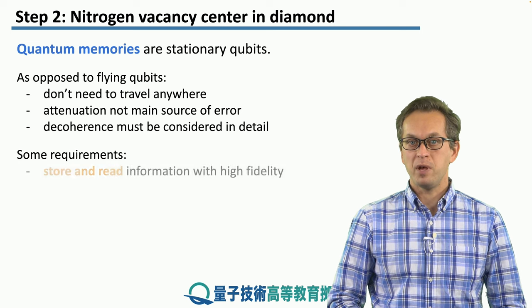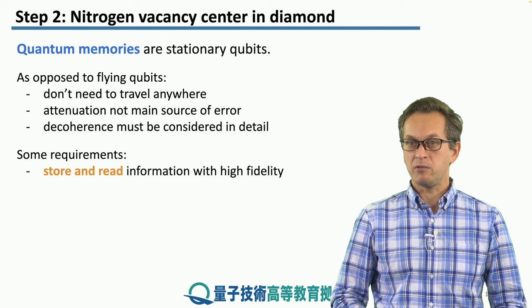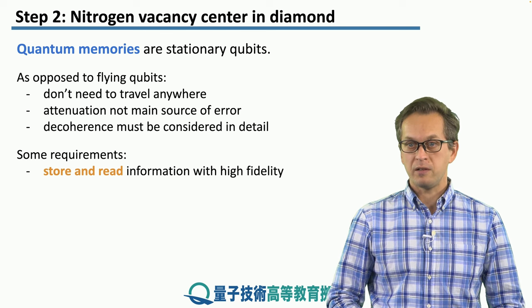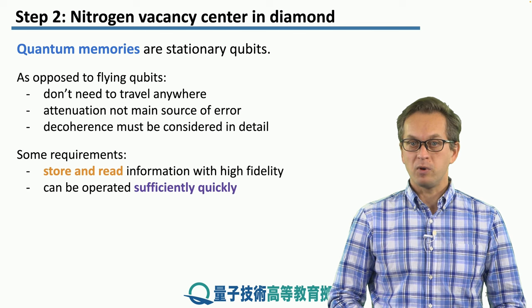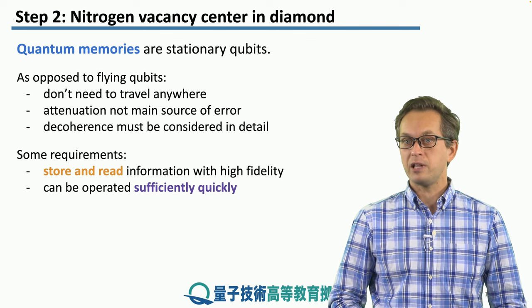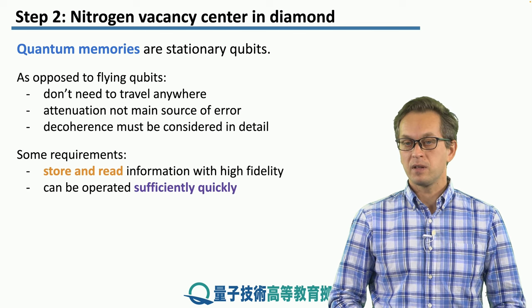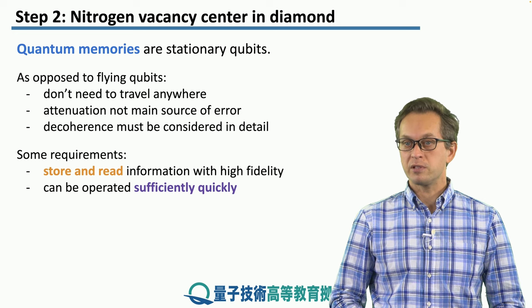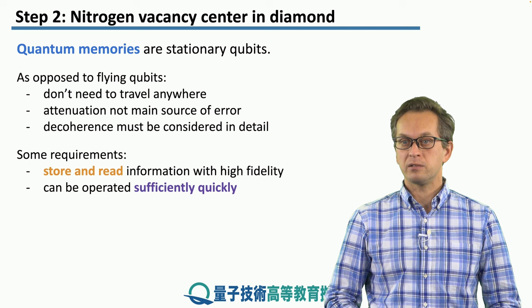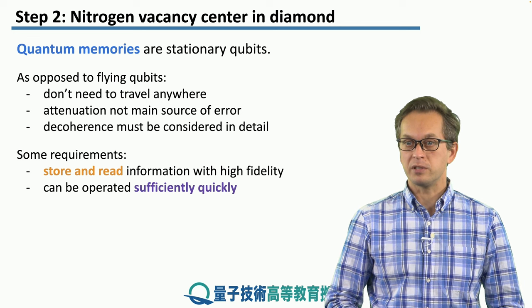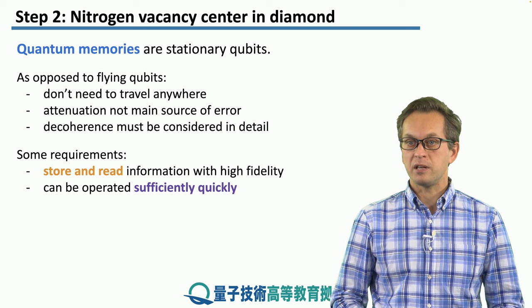Here are the main requirements. We would like the memory to be able to store and read information with high fidelity. We would like it to operate sufficiently quickly. Sufficiently quickly is usually determined by the coherence time of the memory, as well as some other external time needs coming from the network operations, such as establishing entanglement, purification, and so on.